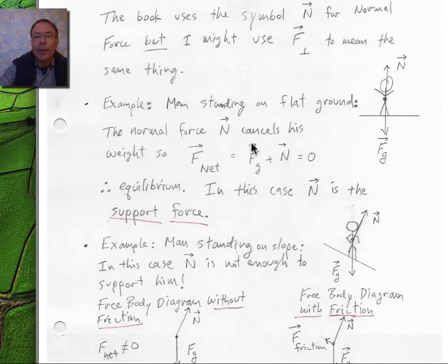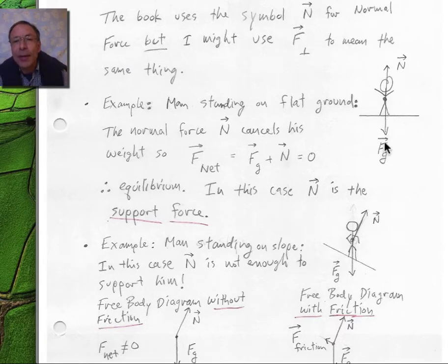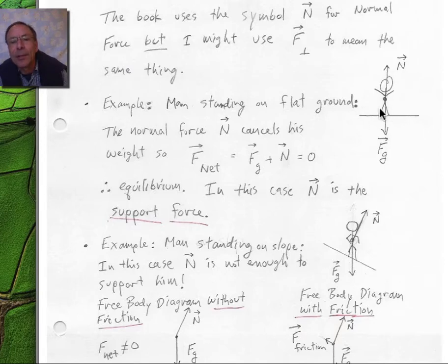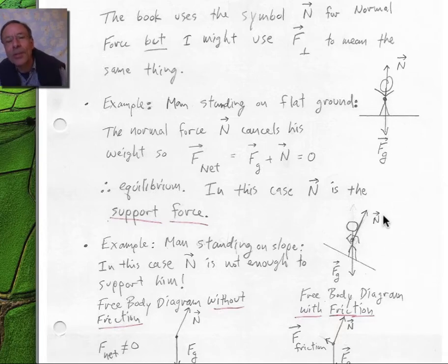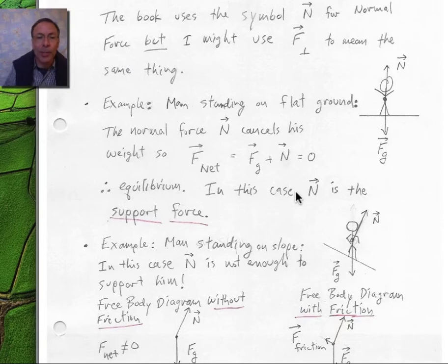Let's look at some examples of normal forces. In the first example, a man is standing on flat ground. His weight, labeled F sub G, is straight down. The ground is pushing up on him — that's the normal force. The ground pushing up on him is at 90 degrees, perpendicular to the ground itself. The normal force's job is to keep the guy from falling toward the center of the earth; we also call it the support force. Since the two forces cancel, the net force is zero — the guy is in equilibrium.